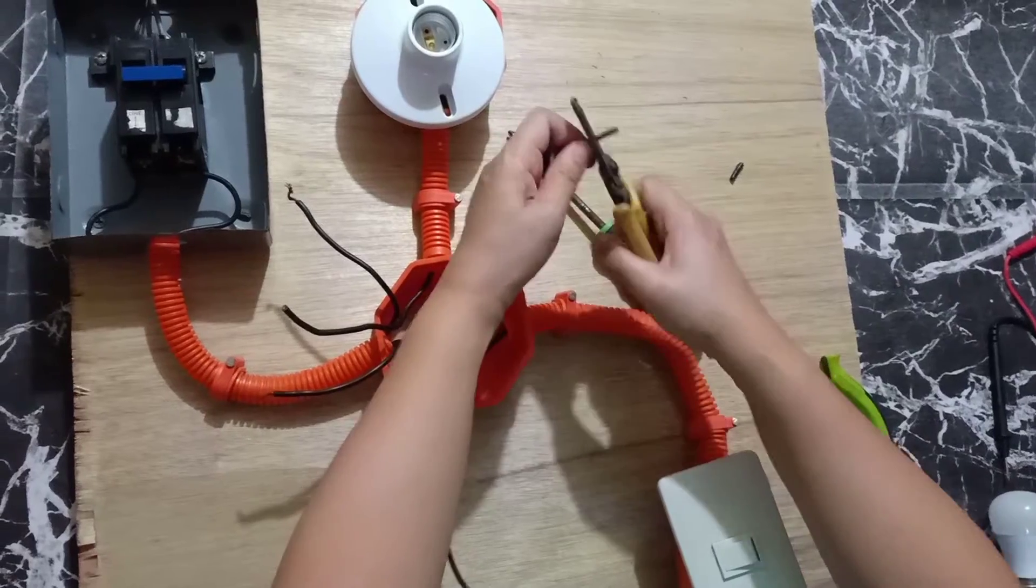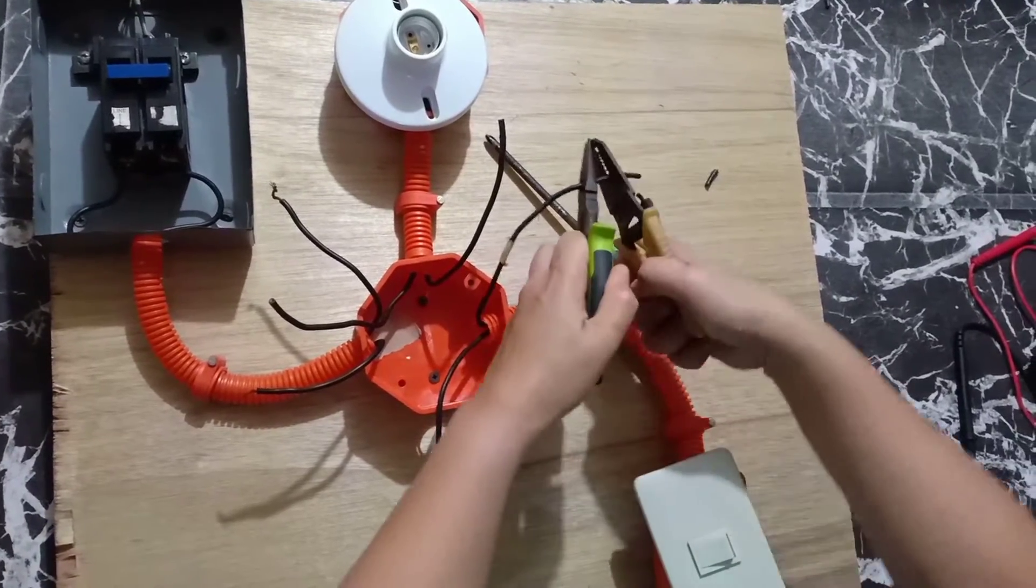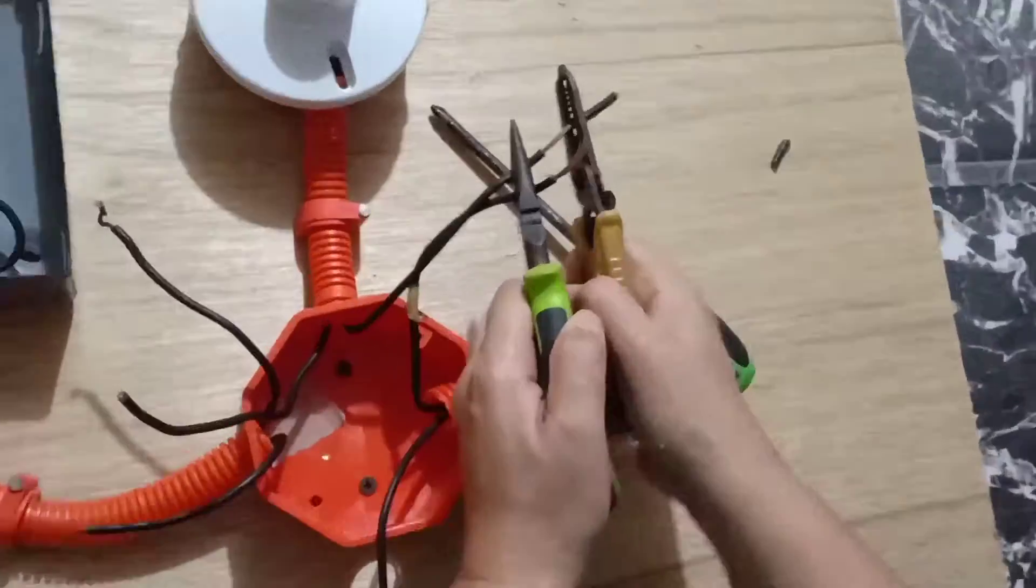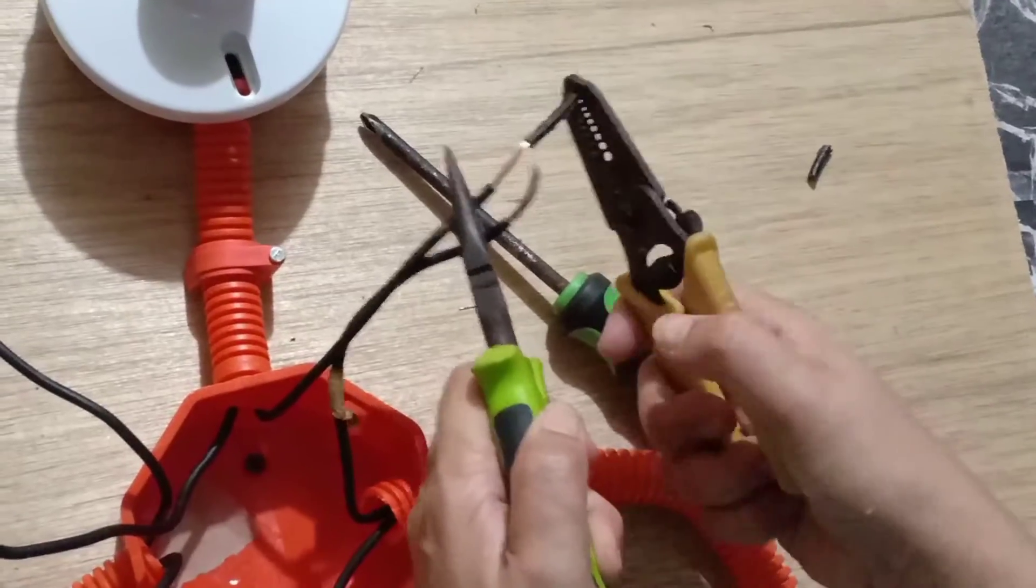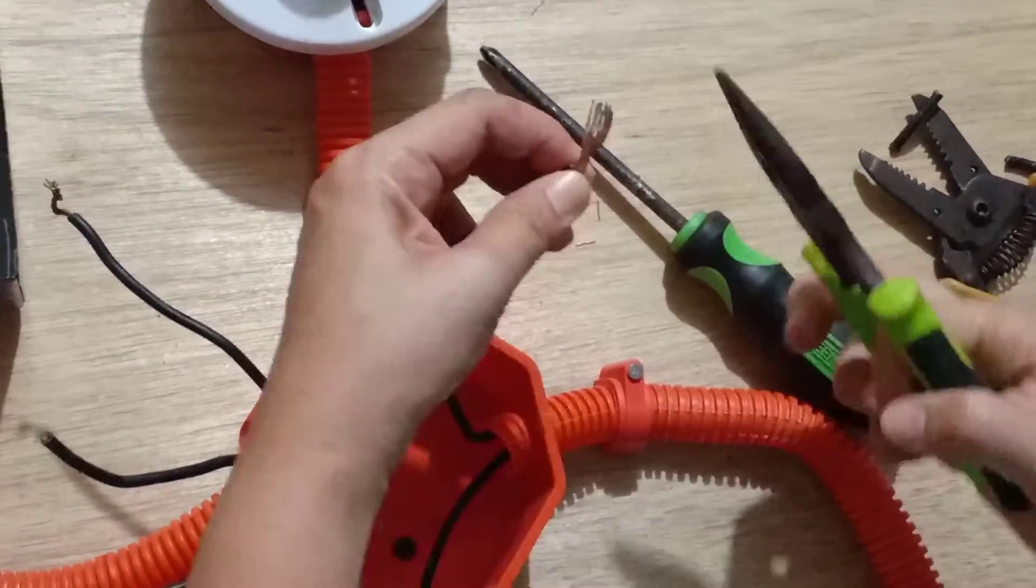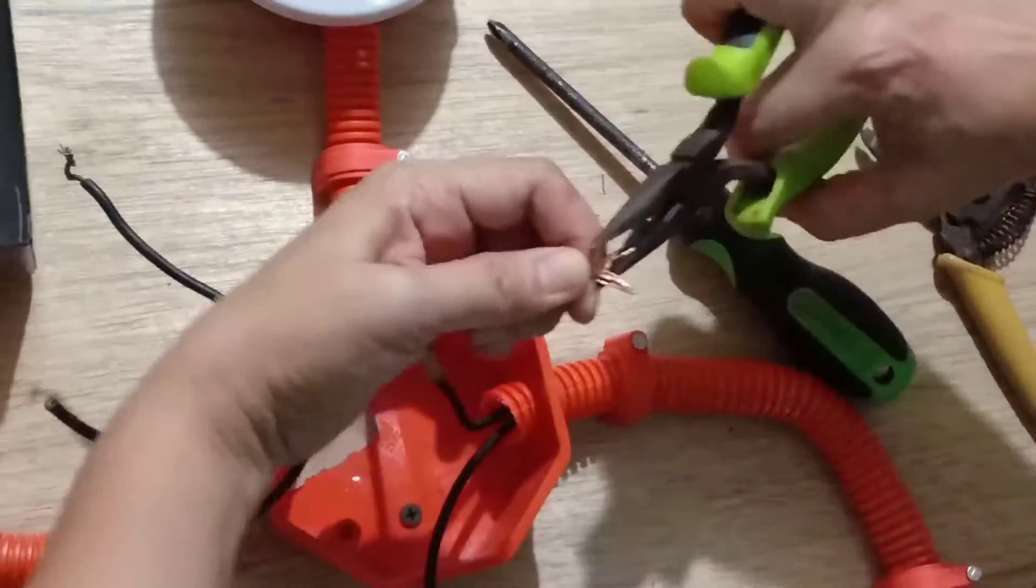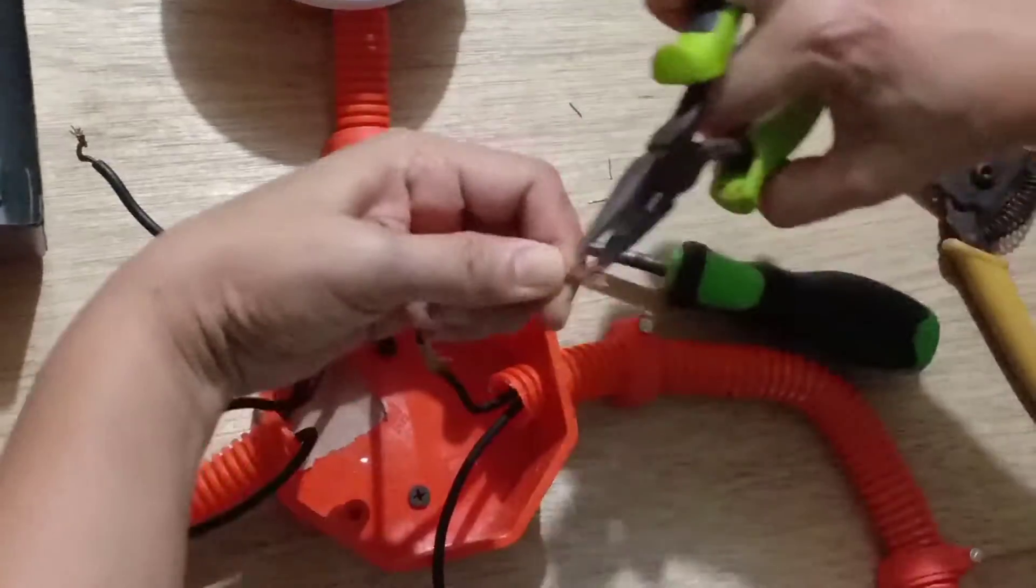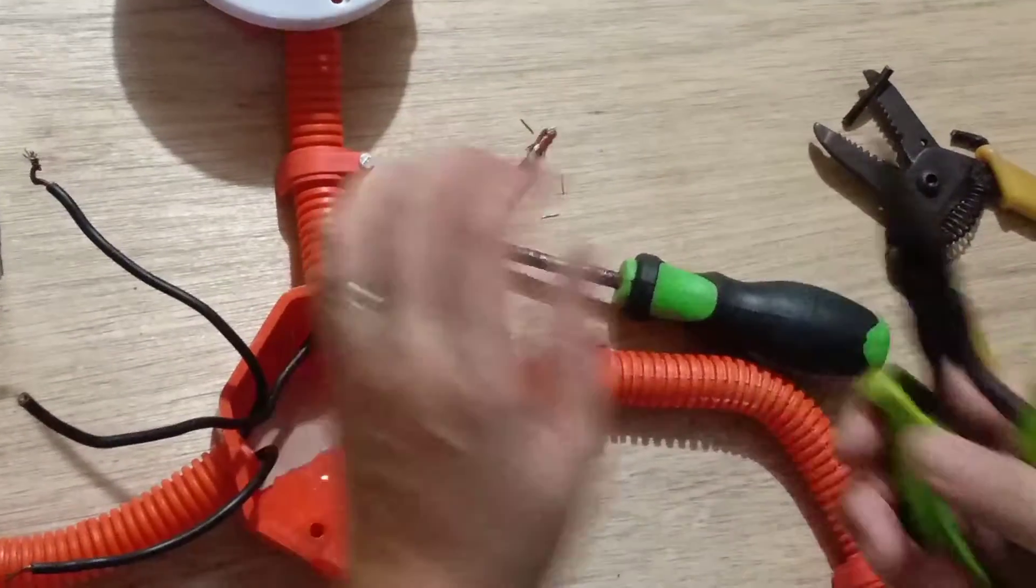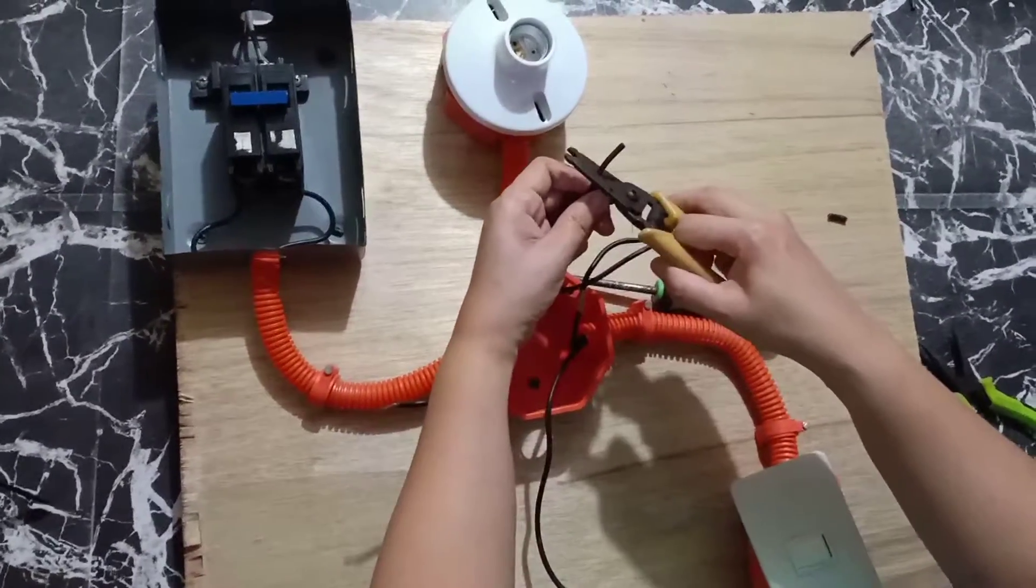So we have to remove the insulation at least two to five centimeters. It should be not too short, because if we remove very short insulation, so it tends to remove. So after twisting the wire, we can bend it so that there would be no loose connection. So the other wire from our lamp holder will be connected with our source.